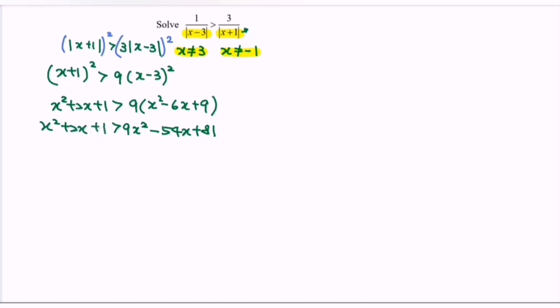So rearrange the situation, where we have 9x²-x²-54x-2x+81-1 less than 0. So 8x²-56x+80.